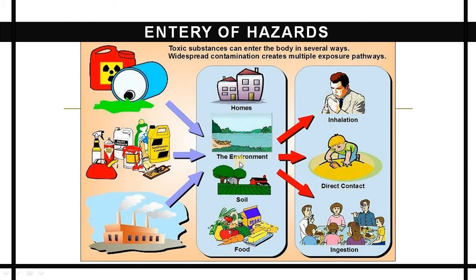Humans are ultimately exposed to hazardous waste through the environment — soil and food. Chemical industries directly deposit residues or hazardous waste into the environment. Through this, polluted water is taken up by the soil as well as by food, which becomes contaminated and is directly consumed by human beings.